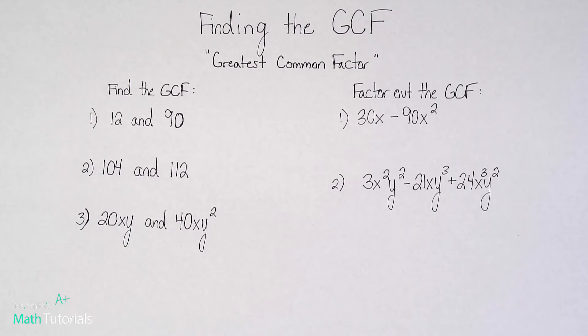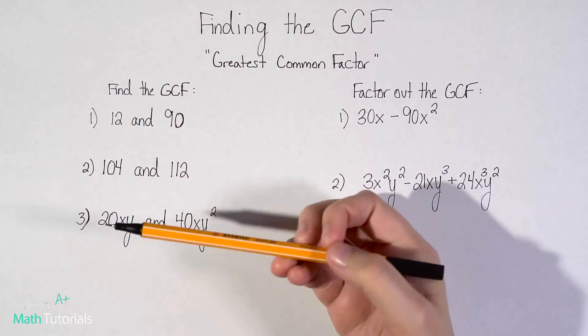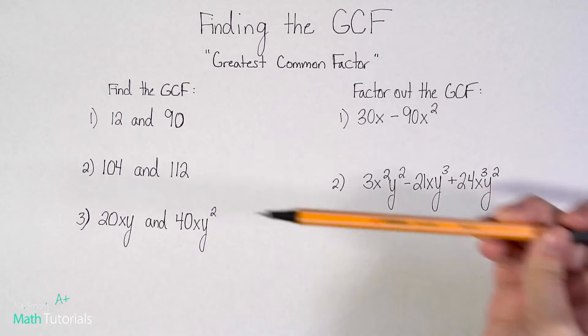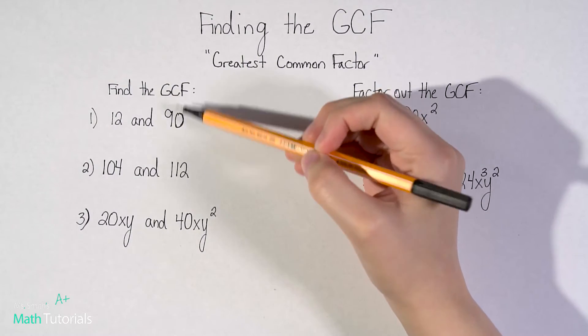All right, so finding the GCF, which is what we shorten for the greatest common factor. So when given two terms, we want to be able to pull out the largest factor that both of those terms have in common. So with these three, we're going to be just determining what would be the greatest common factor between two terms. And then over here, we're going to talk about actually factoring out the GCF. So first, let's just get the hang of finding the GCF.